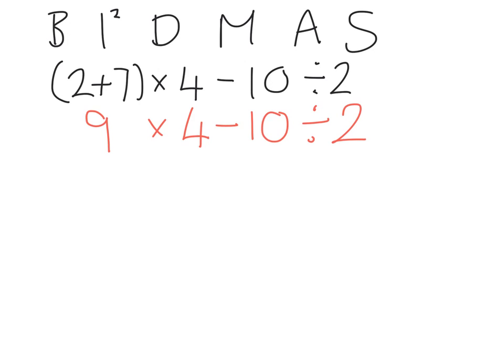So I've just done the brackets, are there any squared numbers? No. So the next one is division. So my division is 10 divided by 2, so I'll work out how many 2's there are in 10. 5. So the answer is 5.